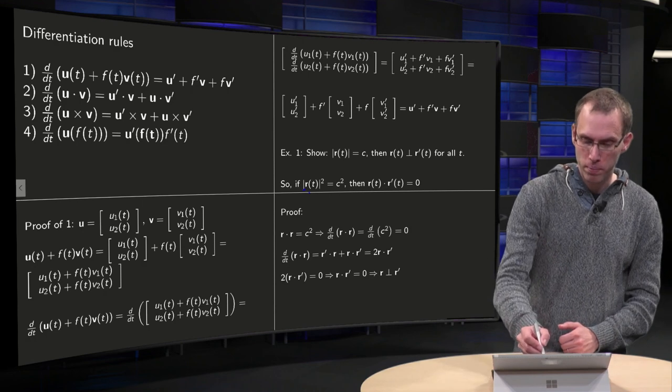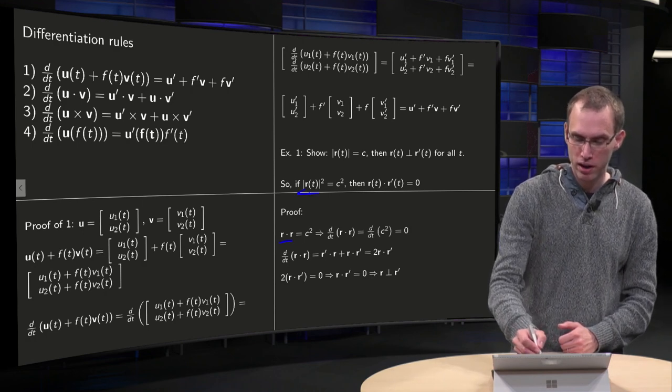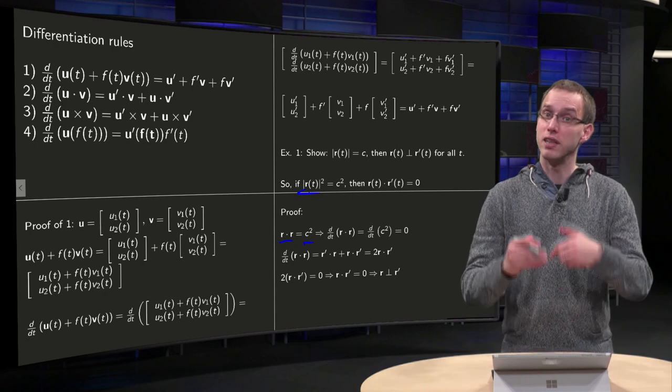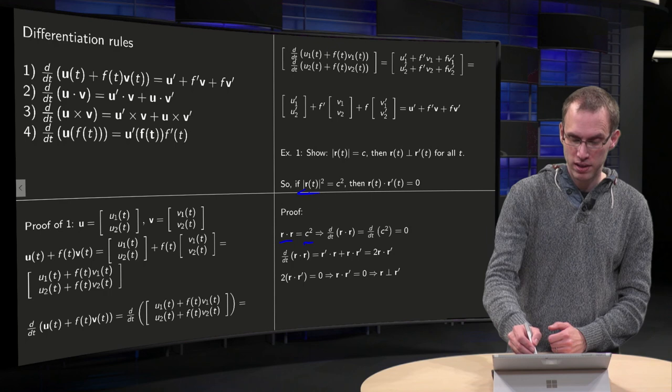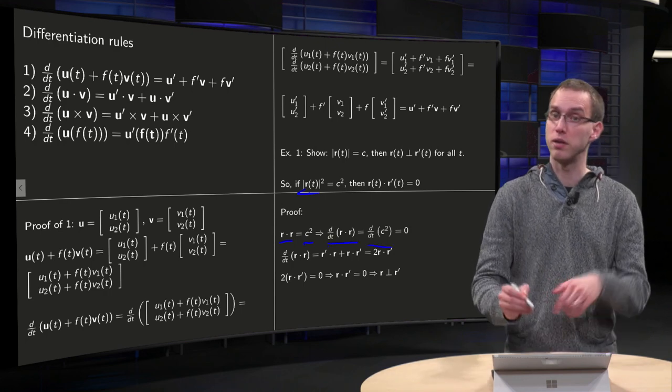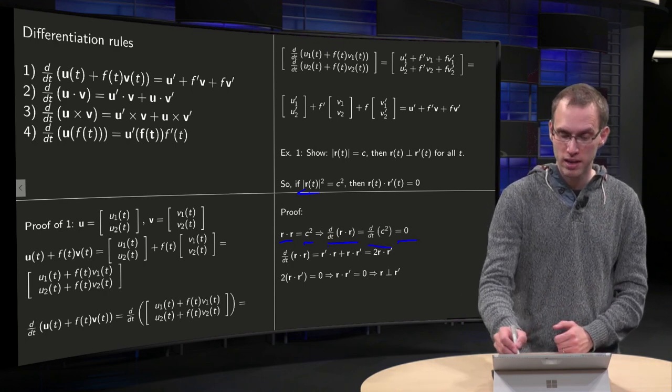Well, if the norm squared is c squared, then r dot r equals c squared. We can differentiate with respect to time on left and right. So here we get d/dt of r dot r. Here the d/dt of c squared, but c is a constant, so this equals zero. And the d/dt of r dot r equals—we can use this rule over here, but now with u equals r and v equals r.